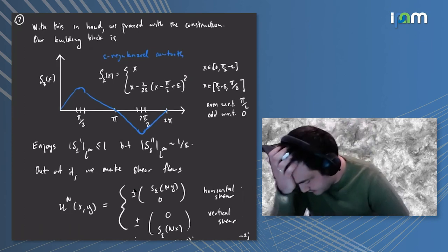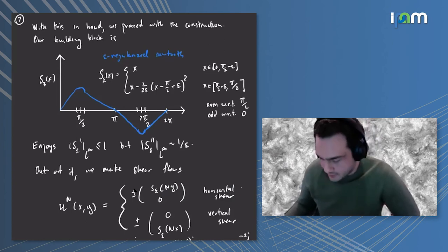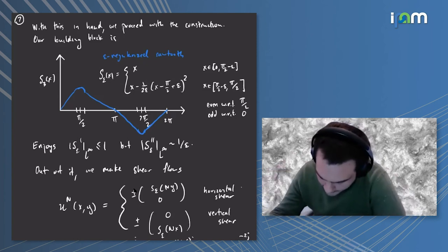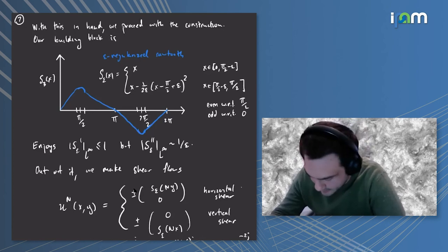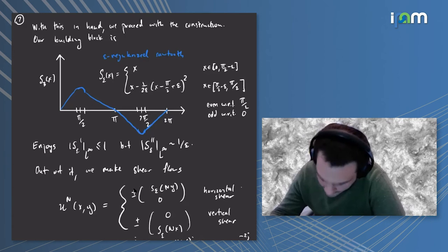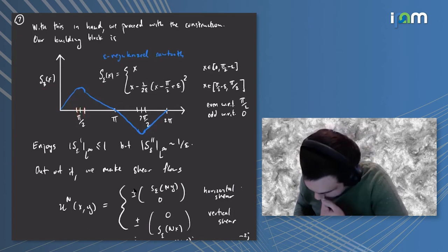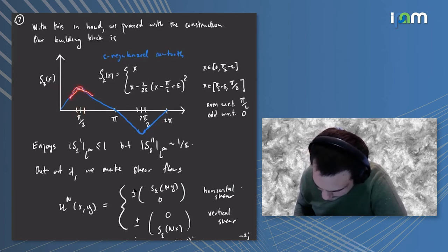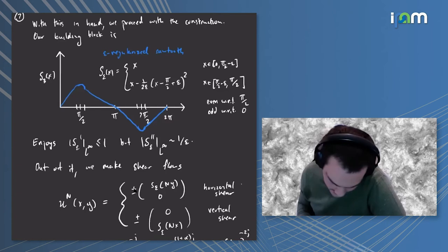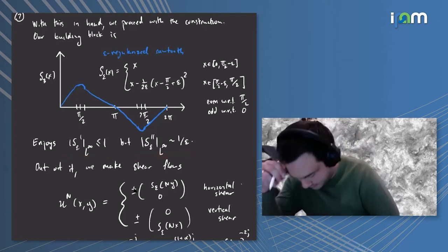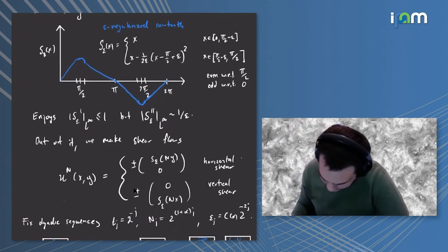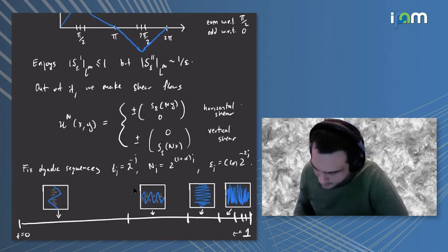Let's see how one could construct an inviscid scalar with that property. We'll use building blocks that are alternating shears that become increasingly sharp and higher frequency. The basic building block is what we call S_ε, a regularized sawtooth. There's some region of width epsilon over which the sharp corner is replaced by something smooth. This function has the property that the derivative is bounded but the second derivative is like 1 over epsilon. Out of this we build shear flows, either horizontal or vertical at a certain frequency.